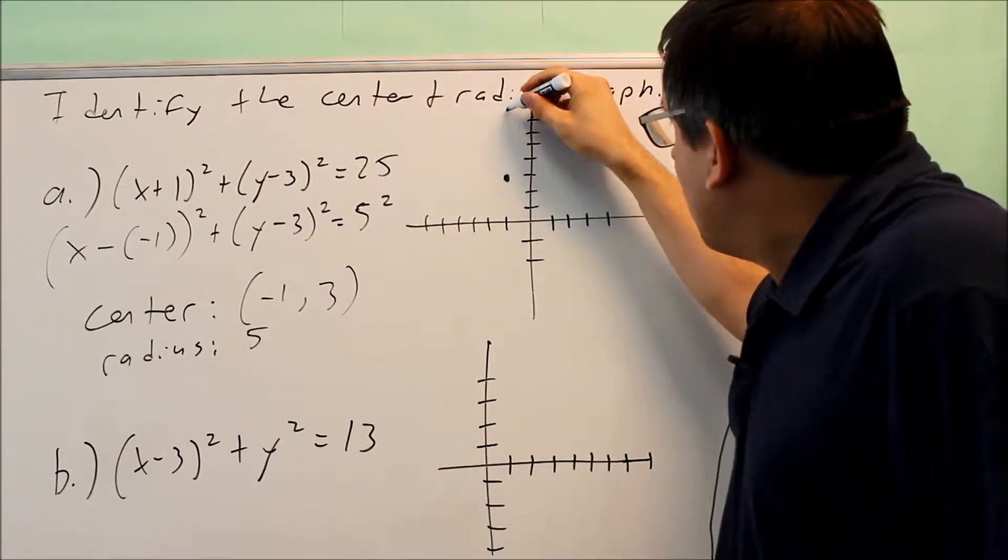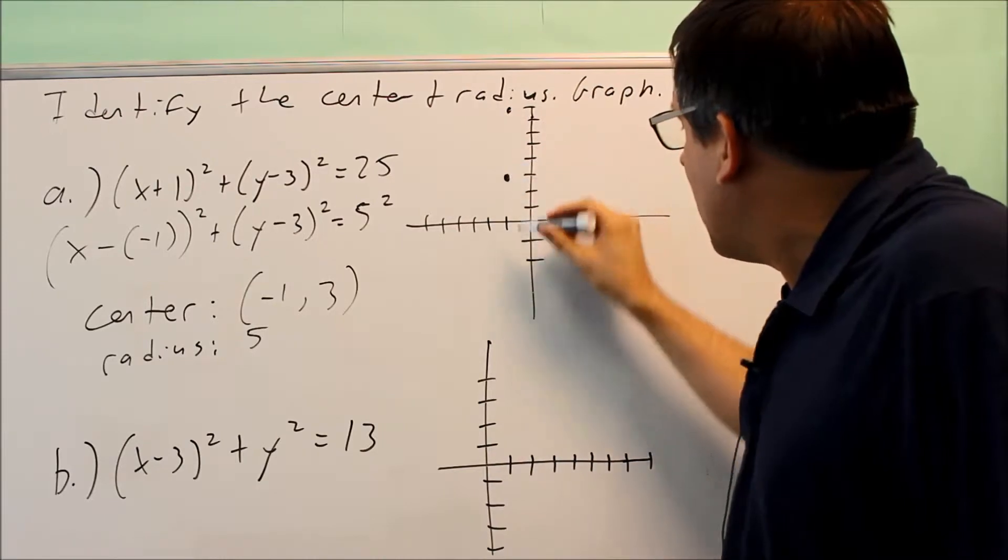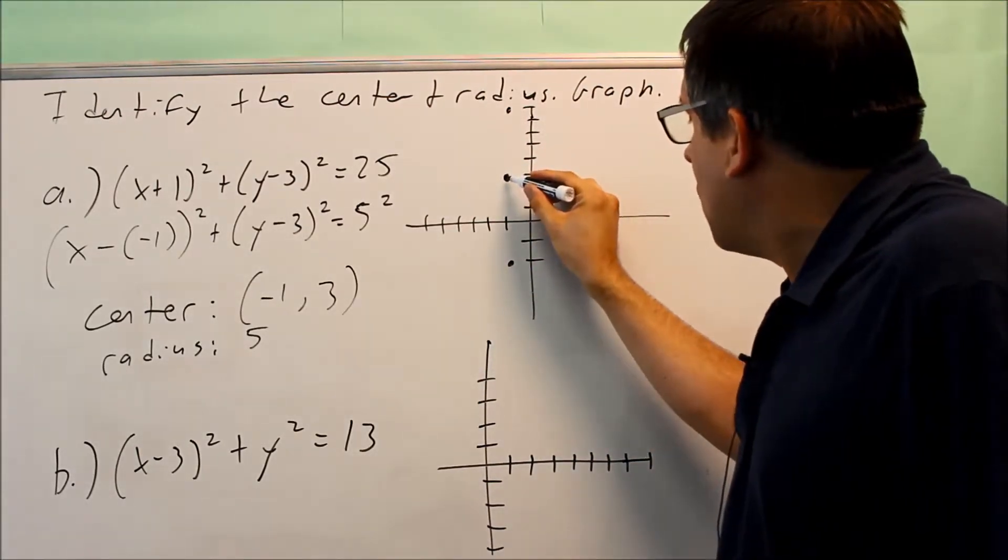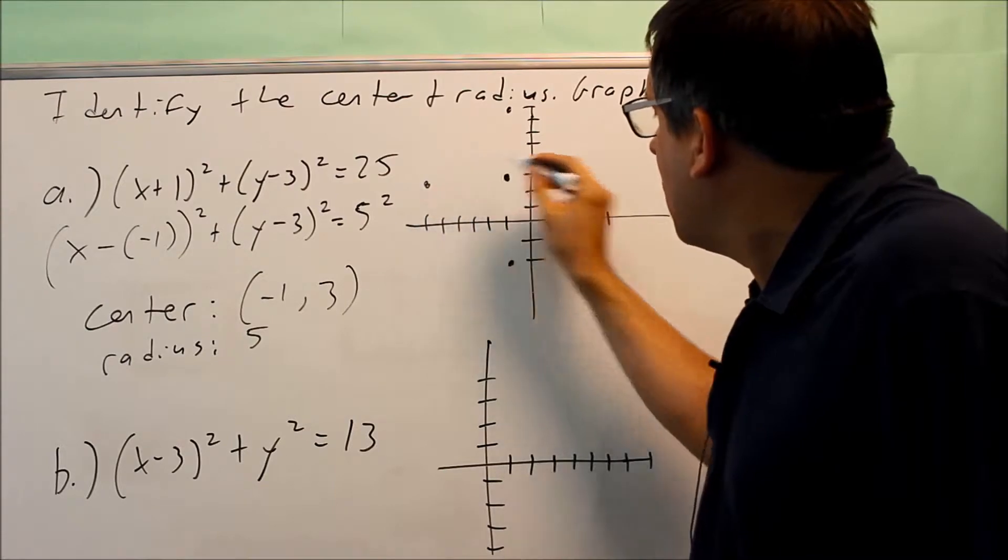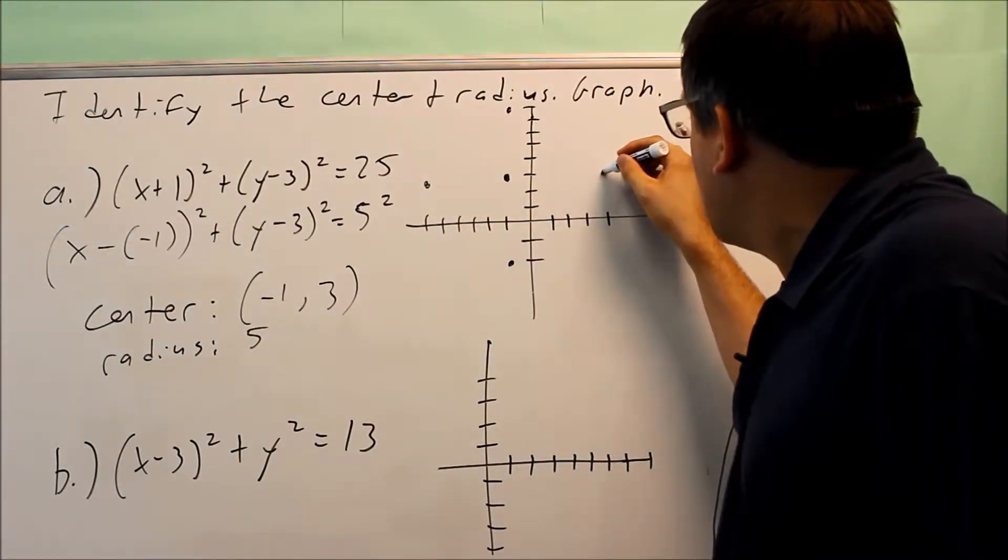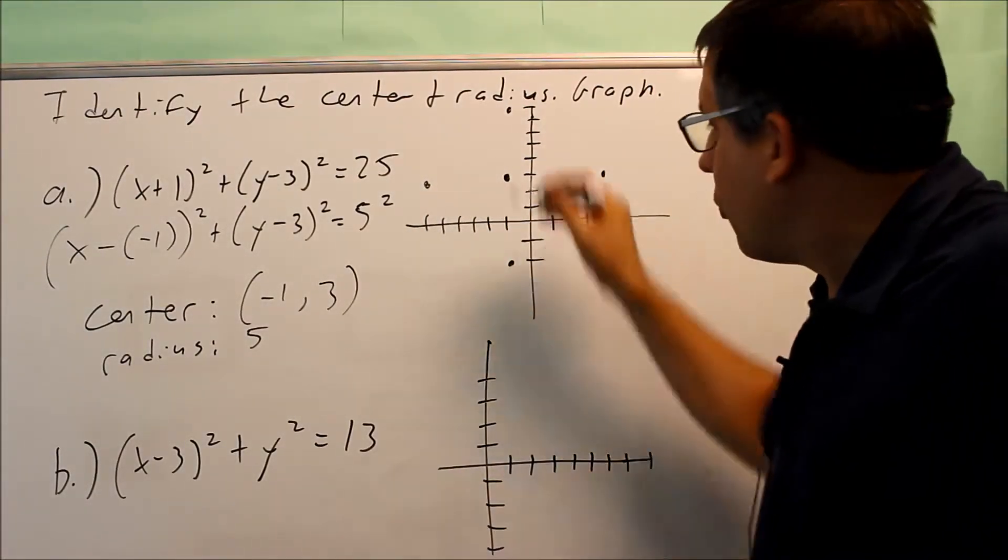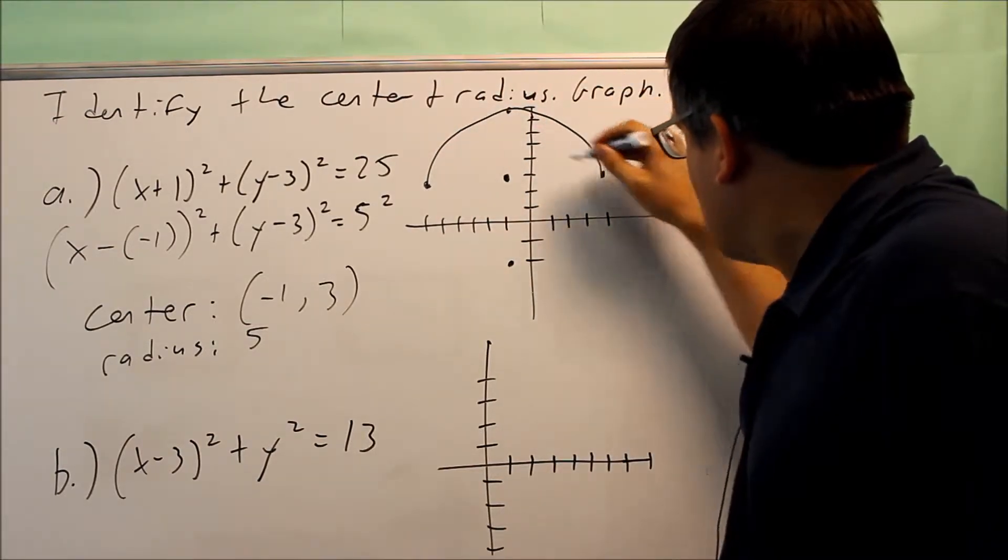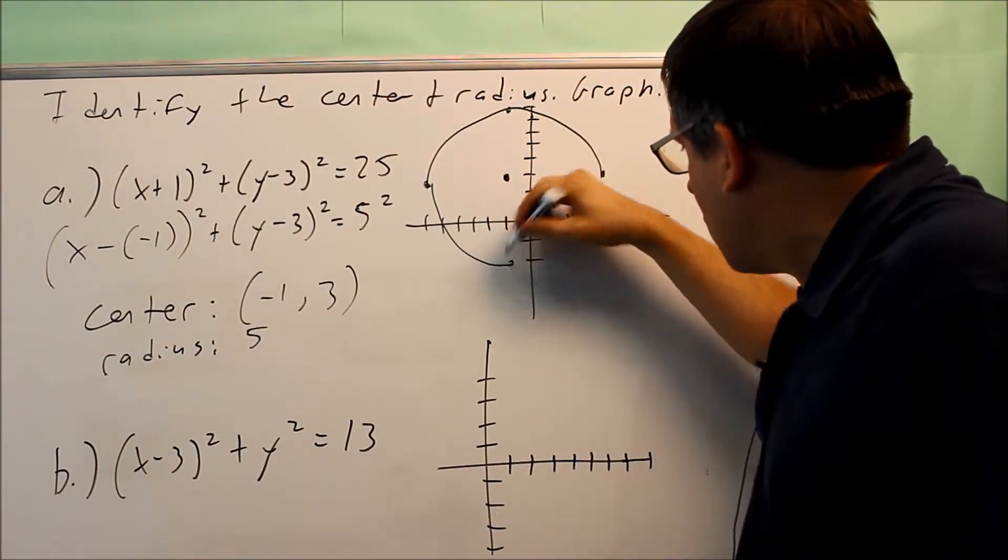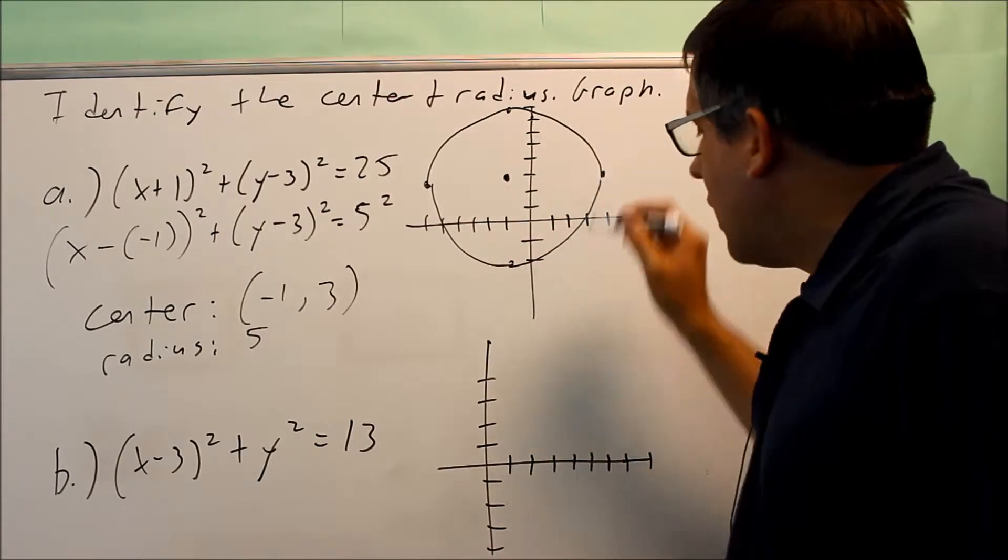So from here I'm going to go up 5, right here I'm going to go down 5, from the center I'm going to go left 5, and I'm going to go to the right 5. So now I have my four points. I can connect those and this would be my completed graph. And now we're ready to go down to Part B.